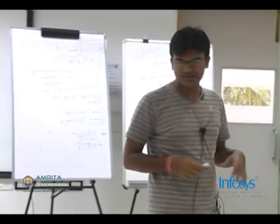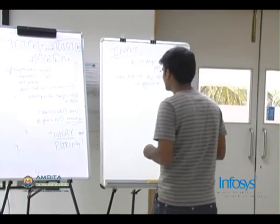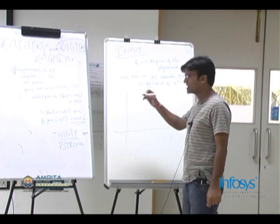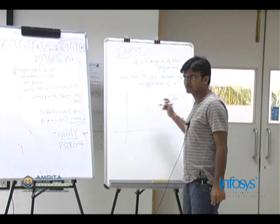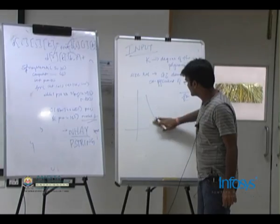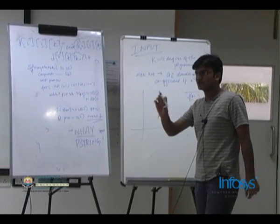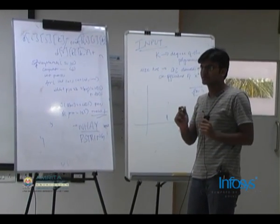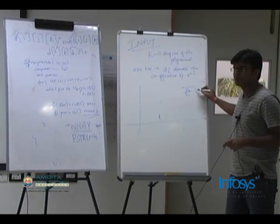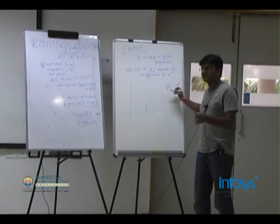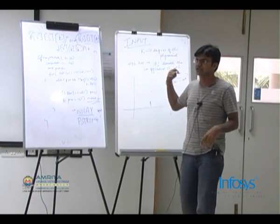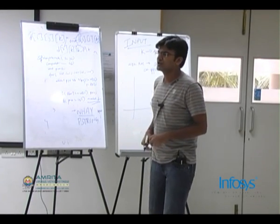One suggestion is Newton-Raphson, but the problem with that is the formula has F'(x) in the denominator. If two of the roots of the polynomial coincide, when you are approaching that root, F'(x) would also approach zero, so this fraction would start approaching infinity and Newton-Raphson will start behaving anomalously.